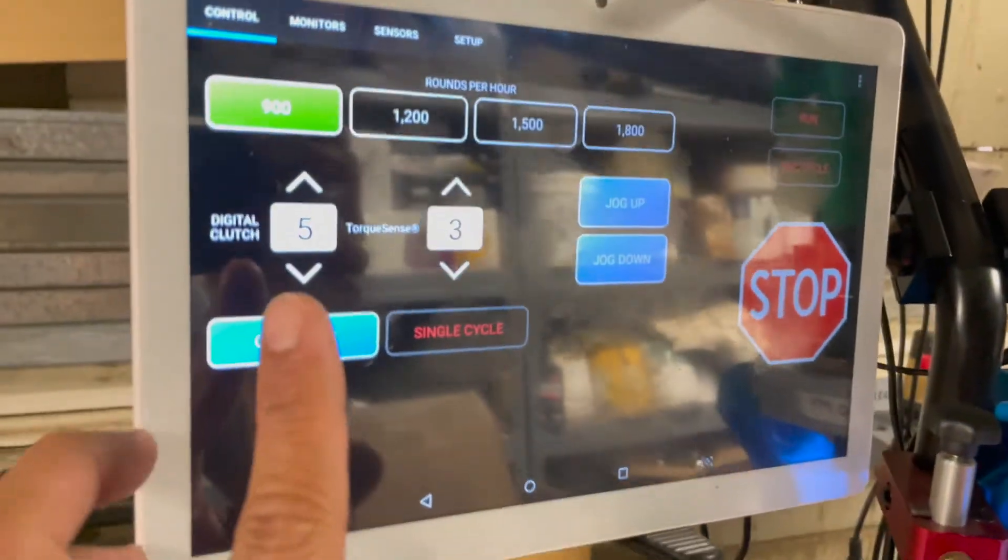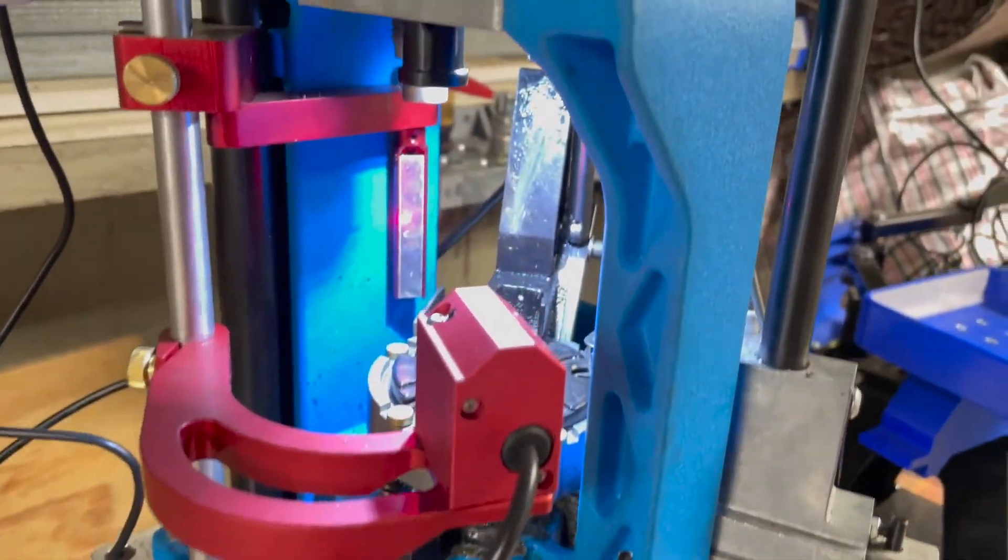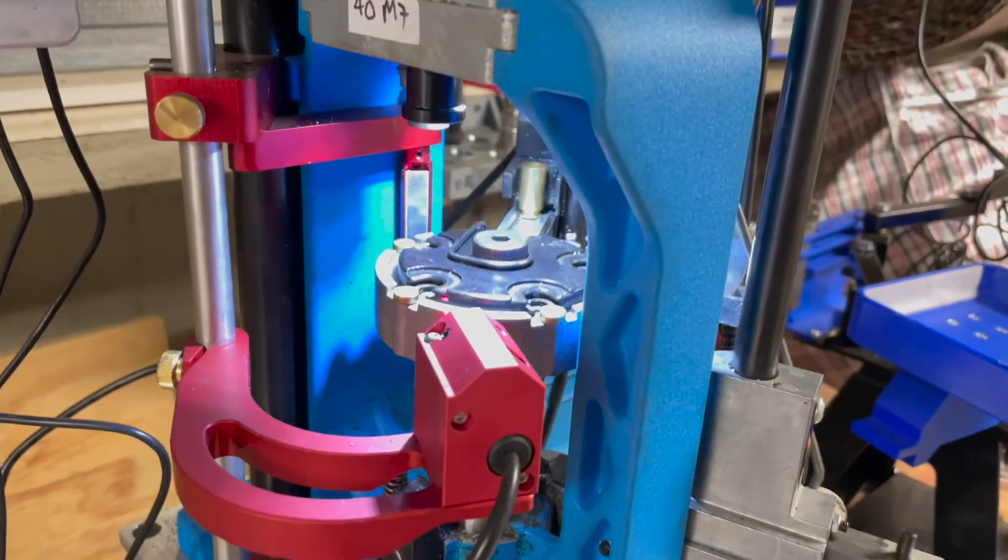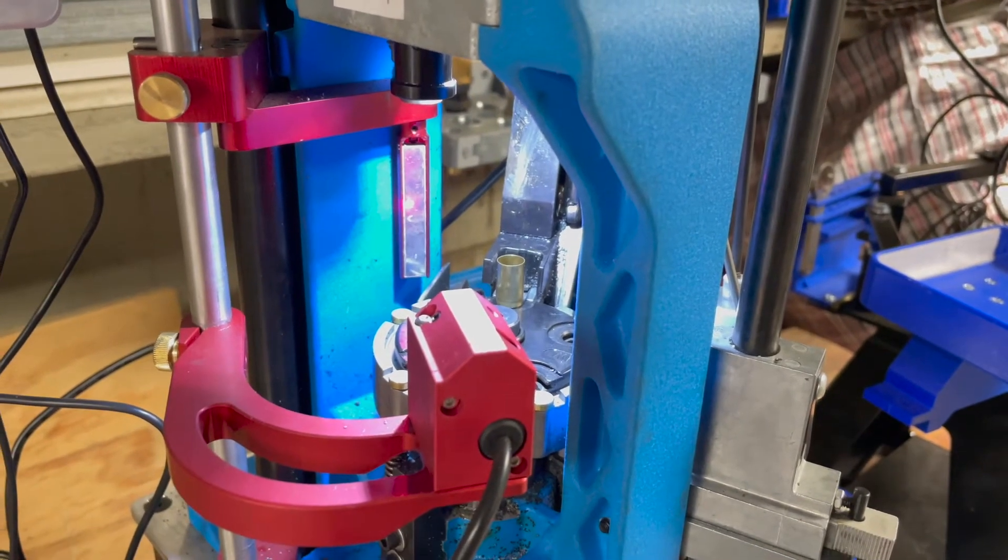Then you just press calibrate. Finds the bottom, finds the top, and it remembers the bullet sensor. It sets up the bullet sensor location.